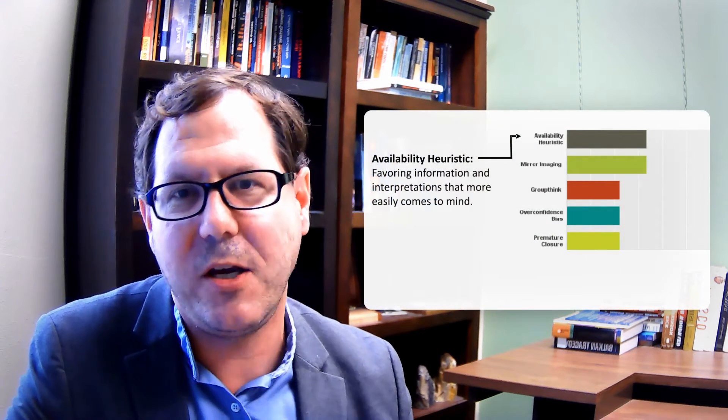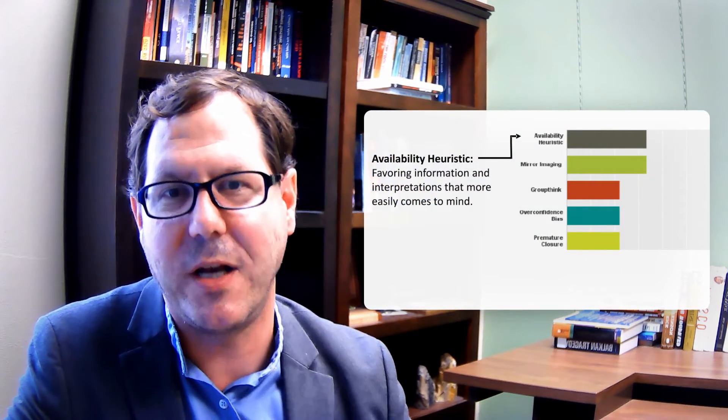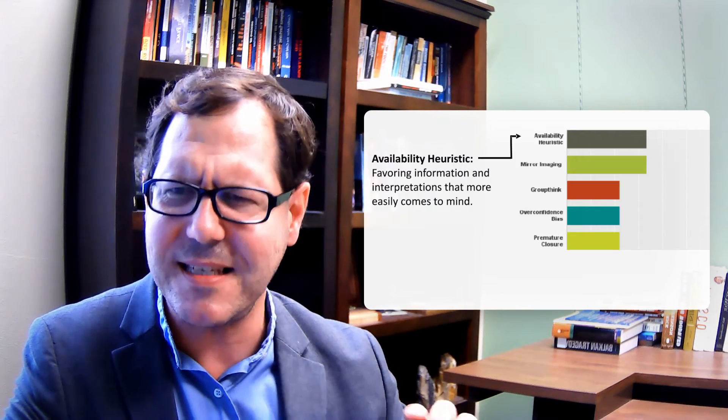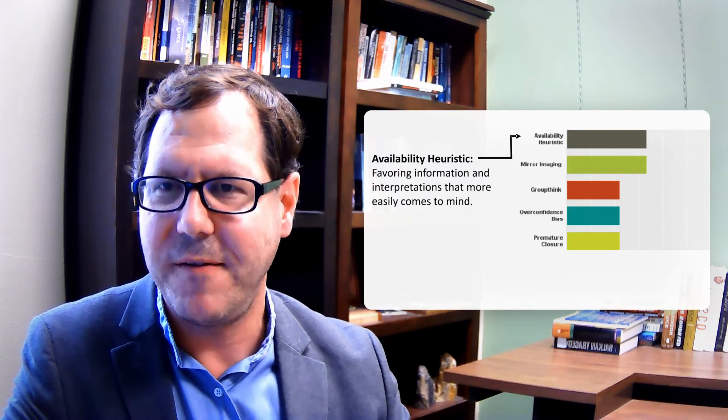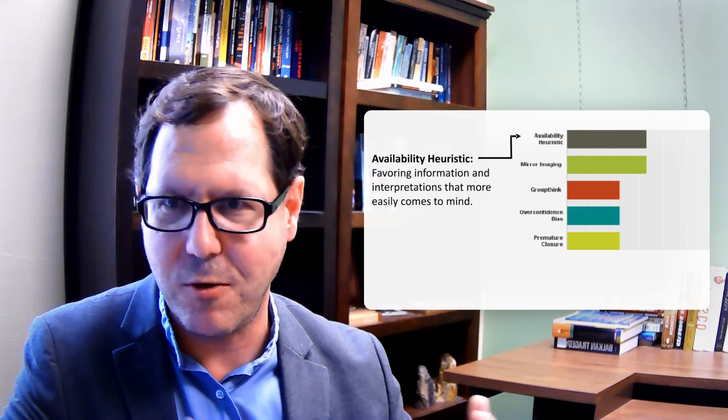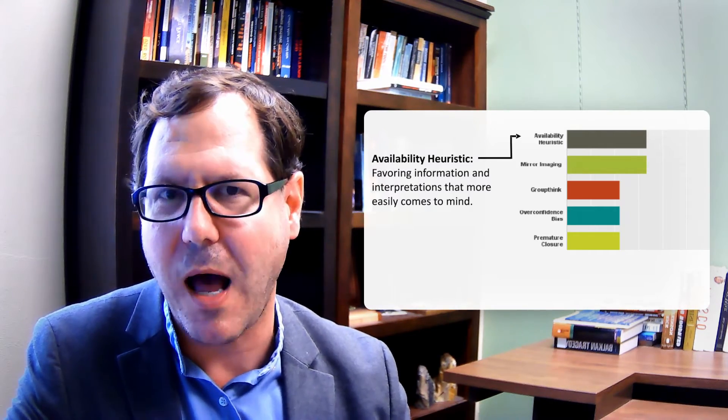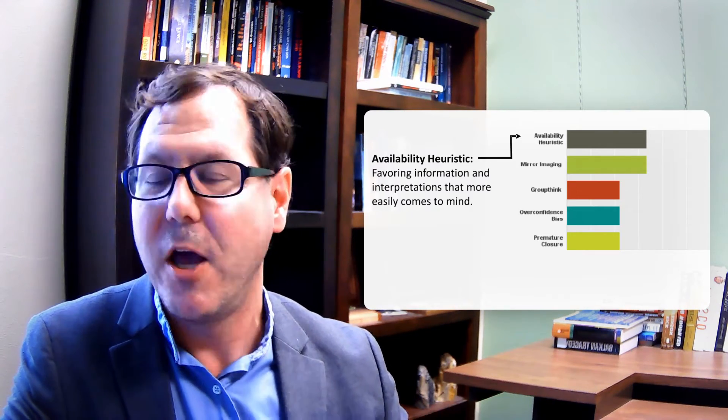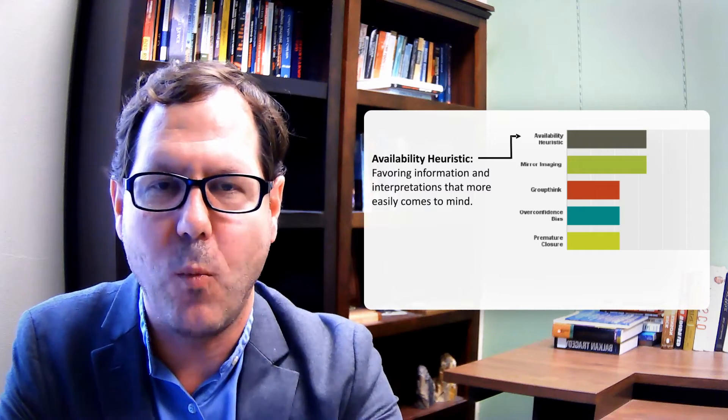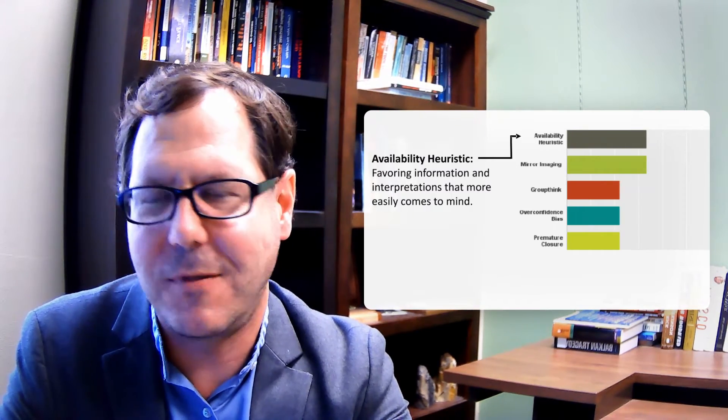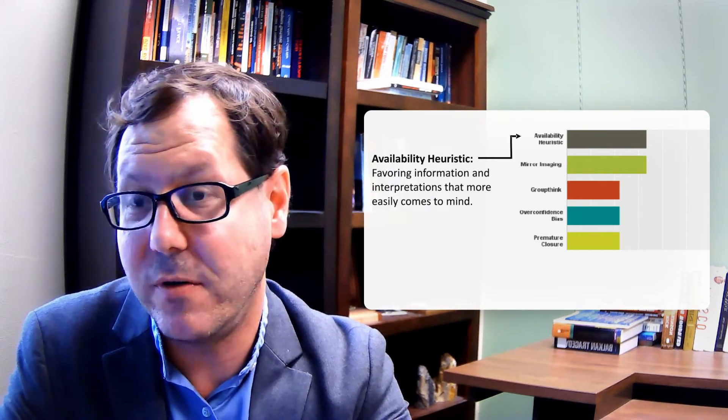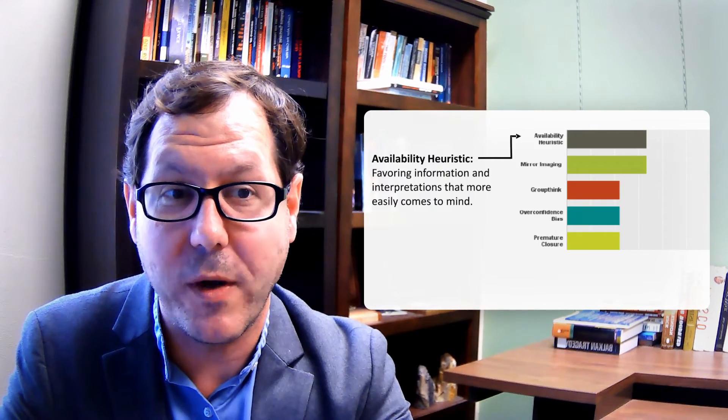There's the availability heuristic - favoring information and interpretations that come more easily to mind. This is similar to vividness bias. If there's an experience you've had or something you've been thinking about a lot, if you can recall it quickly you're going to anchor on that whether or not it's an appropriate comparison or analogy.